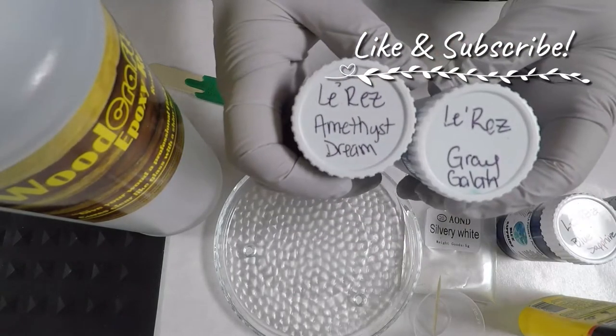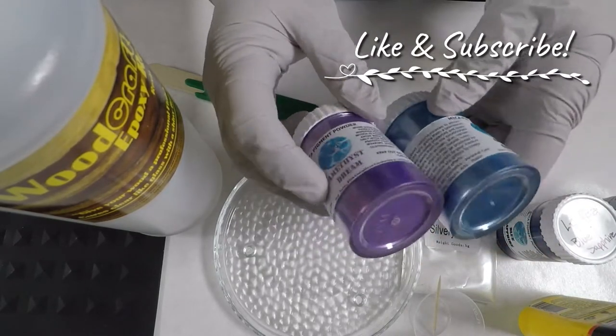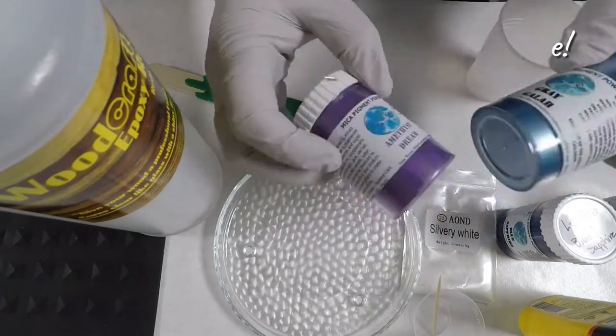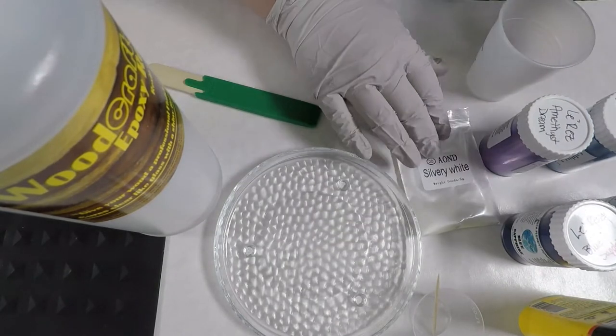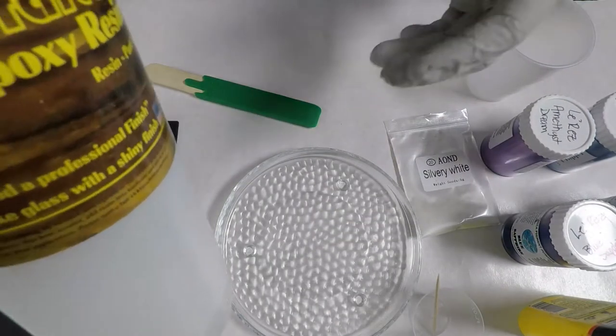I've also got amethyst dream and gray gala and I will also be using some silvery white I got in a set from Amazon, and that's really only because I currently don't have a white powder from Lorez.